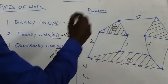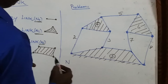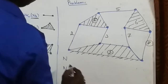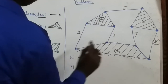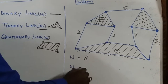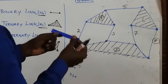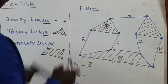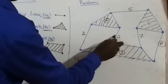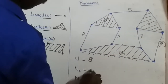First, how many number of links? It is easy to find the number of links here. The maximum number is 8, so the total number of links is 8. Next, what about the binary links? NB means binary link. A binary link is a link having two ends. Here, links 1, 2, 3, 4, and 5 are binary links, so NB equals 5.